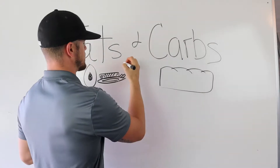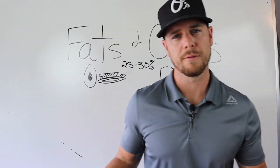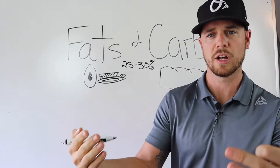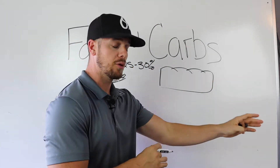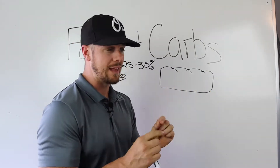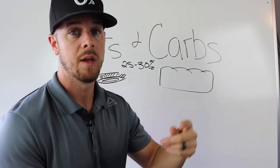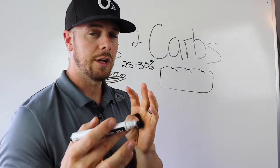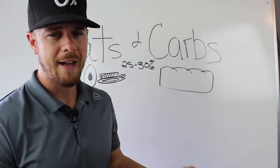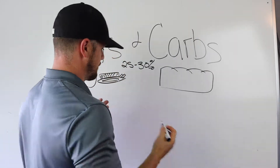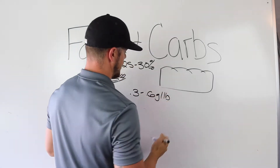The rule of thumb is 25 to 30% of your total calories should come from fats. One gram of fat is equal to nine calories, compared to proteins and carbs where one gram is only equal to four. So we already know one gram of fat has way more calories than a protein or carb. My rule of thumb is 0.3 to 0.6 grams of fat per pound of body weight.